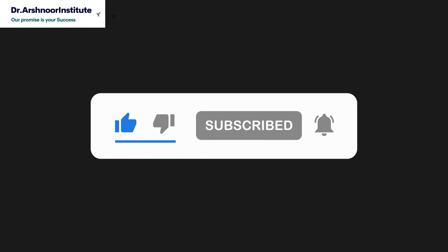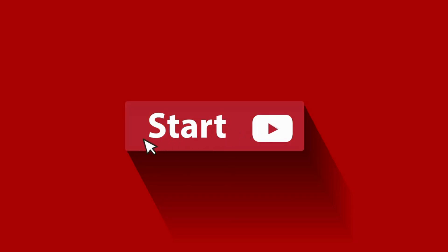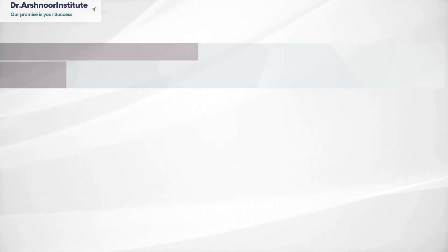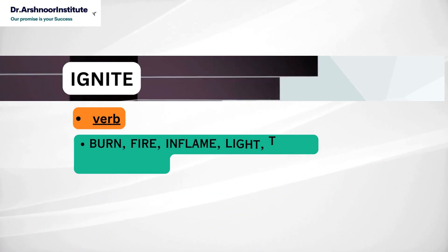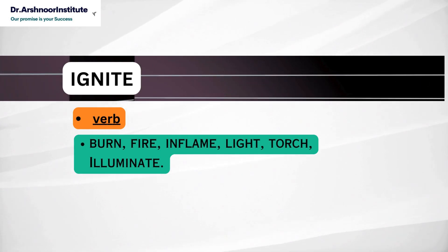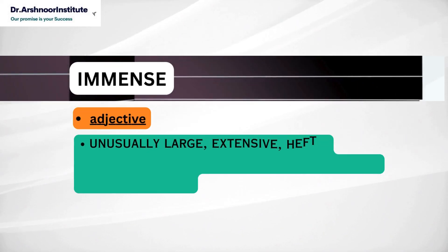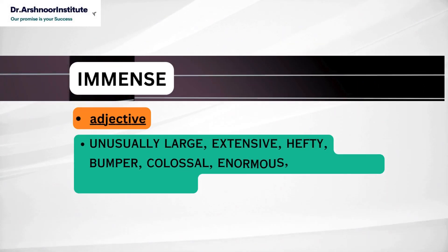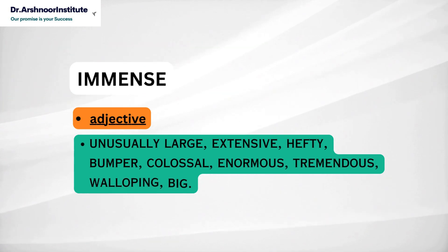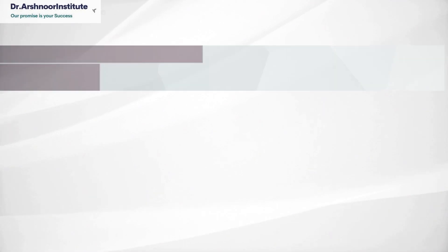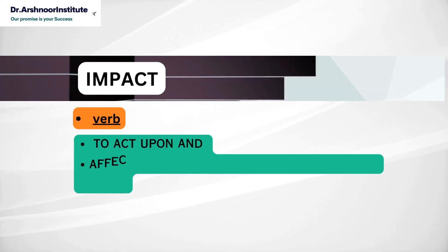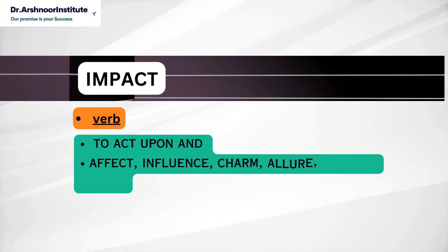Let's start the video. First word is ignite. It's a verb and it means burn, fire, inflame, light, torch, eliminate. Second word is immense and it's an adjective. It means unusually large: extensive, hefty, bumper, colossal, enormous, tremendous, walloping, big. Third word is impact. It's a verb. It means to act upon and its synonyms are affect, influence, charm, allure, impress, sway.